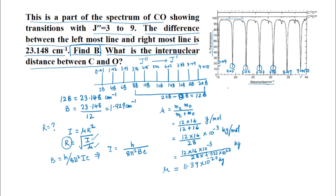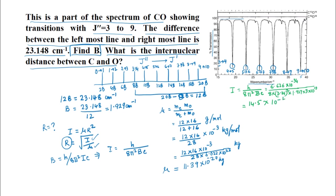Now let us find the value of I. I equals h divided by 8π²Bc. That is 6.626 times 10⁻³⁴ divided by 8 times 3.14 squared times B, which is 1.929, times 3 times 10¹⁰. If we solve this, the value of I that we get is 14.5 times 10⁻⁴⁷ kilogram meter square.